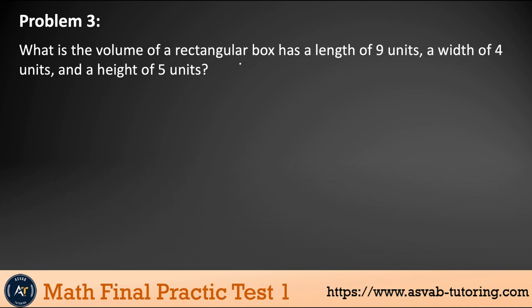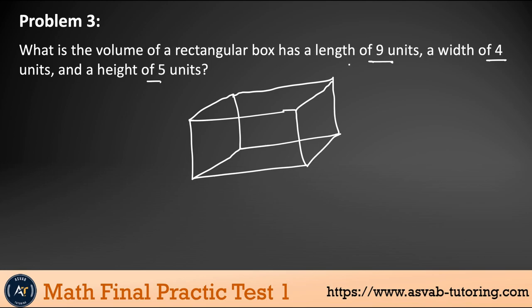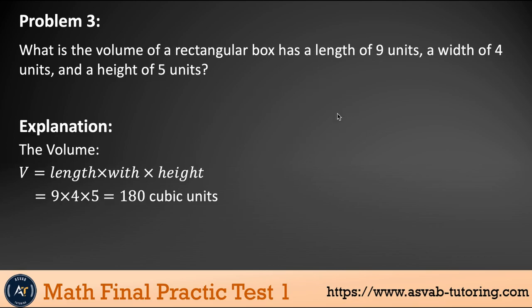Next problem: What is the volume of a rectangular box that has length of nine units, width of four units, and a height of five units? Let's draw a rectangular box—that will help you to understand the problem. That is the most important thing because you're not going to get exactly the same problem, but it will be all similar concept. The volume will be length times width times height. So nine times four times five, that gives you 180 cubic units because the unit of the volume is cubic.